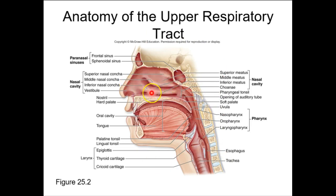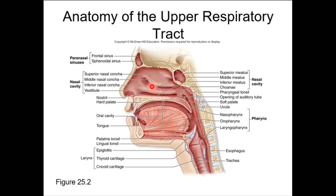Remember those nasal conchae from AP1? They're also known as turbinates. They are very vascular and actually get engorged with blood to help heat the air coming into your nasal cavity. The superior nasal concha contains olfactory epithelium, while the rest are primarily vascular structures for gas conditioning.